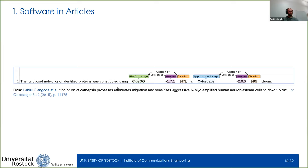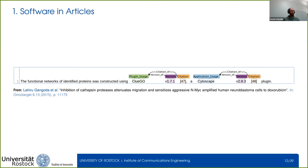A more complex example involves two different softwares. The relation between additional information and software is less obvious here. We also notice there are two different types of software: one plugin, ClueGo, and one application, Cytoscape. They are also related — we add software relations because ClueGo is a plugin of Cytoscape.